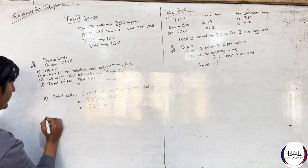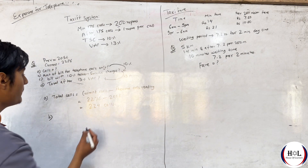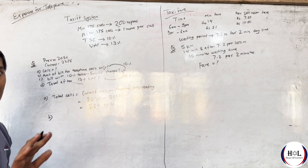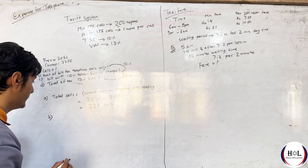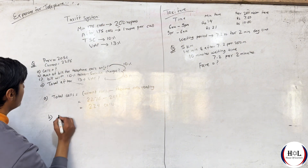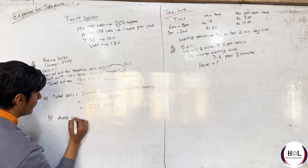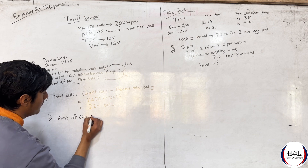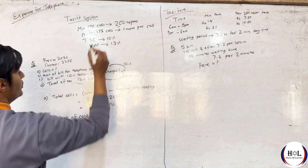The number of calls is the amount of telephone calls. We know that the minimum 175 calls threshold corresponds to 200 calls. Amount of telephone calls, amount of cost — 200 rupees minimum.